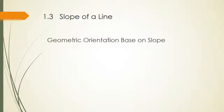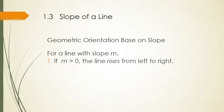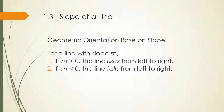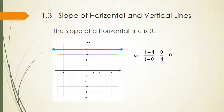Let's talk about geometric orientation based on slope. If the slope is greater than zero, the line rises from left to right. If the slope is less than zero, the line falls from left to right. If the slope equals zero, the line is horizontal. A horizontal line has slope zero — think of it as perfectly flat with no slant.